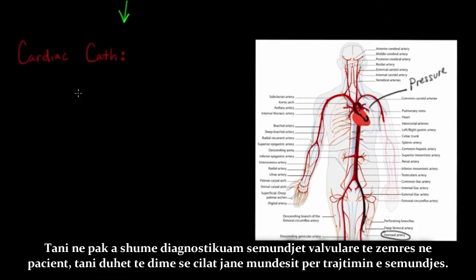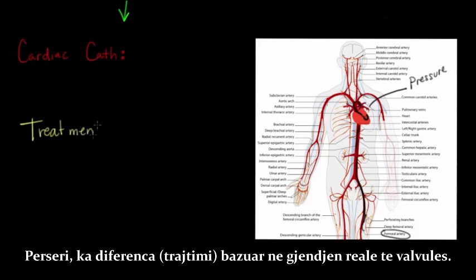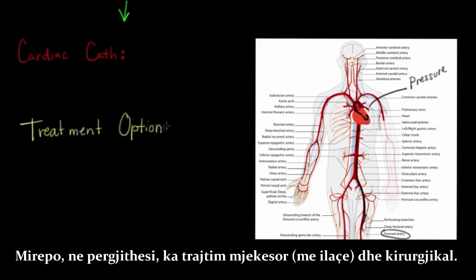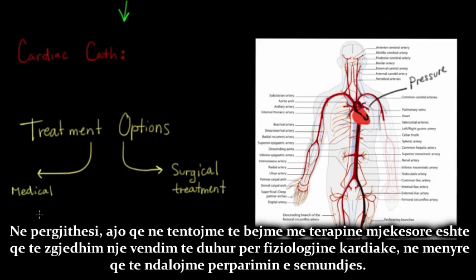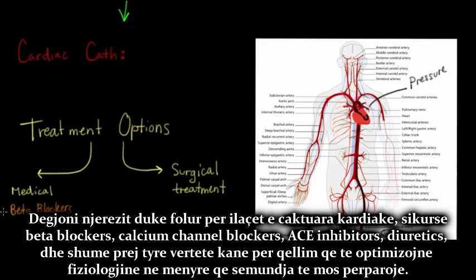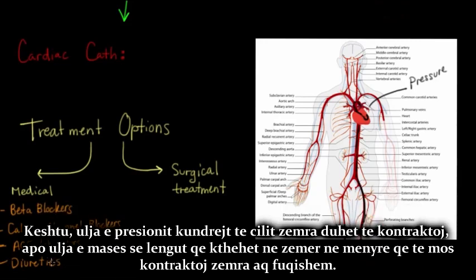Once valvular heart disease has been diagnosed, treatment options include medical and surgical approaches. For medical treatment, because these are very different conditions, there's no single regimen that works for everyone. In general, medical therapy aims to optimize cardiac physiology to stop the condition from progressing. Common cardiac drugs include beta blockers, calcium channel blockers, ACE inhibitors, and diuretics — aimed at lowering the pressure the heart has to contract against or decreasing the fluid returning to the heart so it doesn't contract as hard.